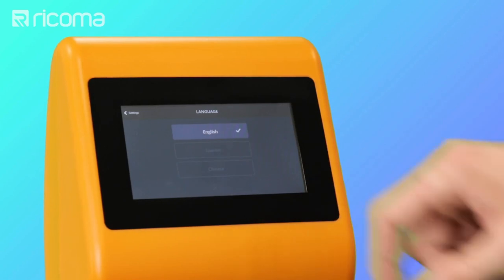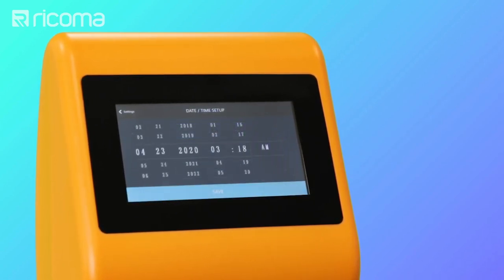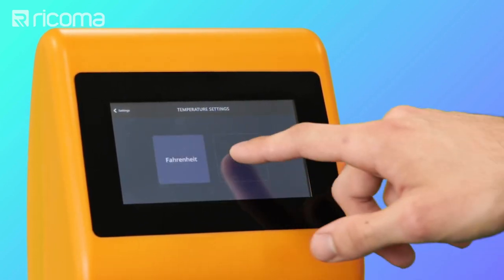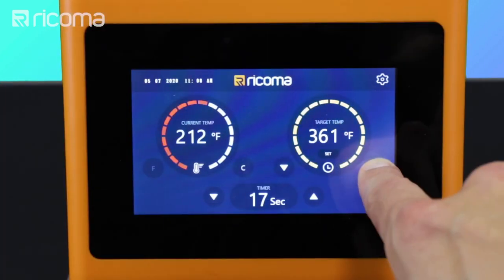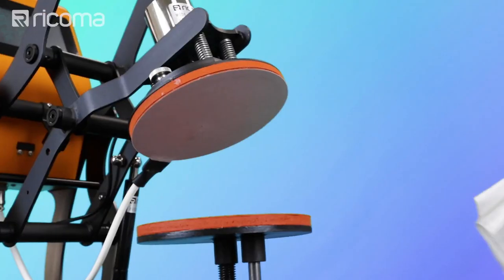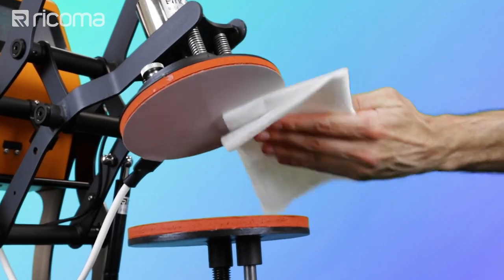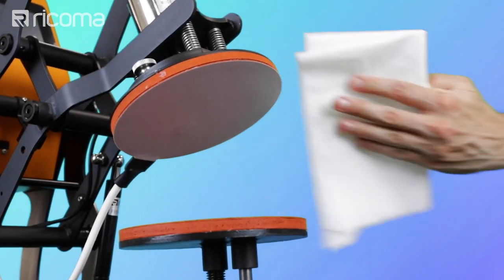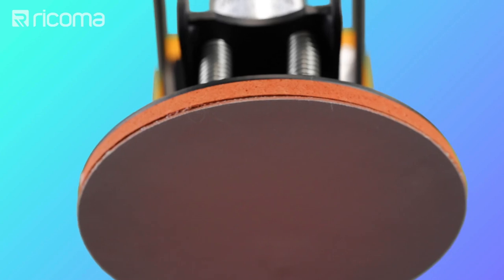Speaking of settings, you can also change the language, date, time, and temperature measurements on the plate heat press. That way, you can personalize the machine so it's even easier to use. And the best part about the plate heat press is that you don't have to worry about cleaning up any messes left behind from the transfer material, thanks to its specially coated platen.